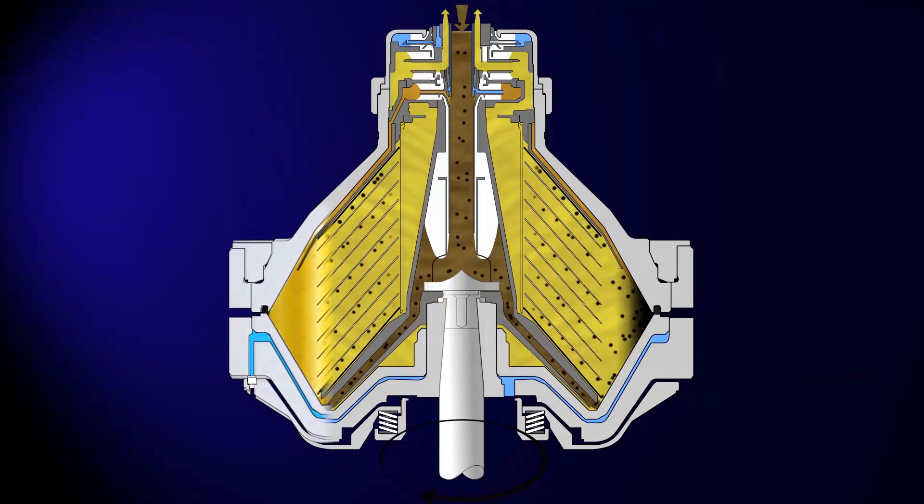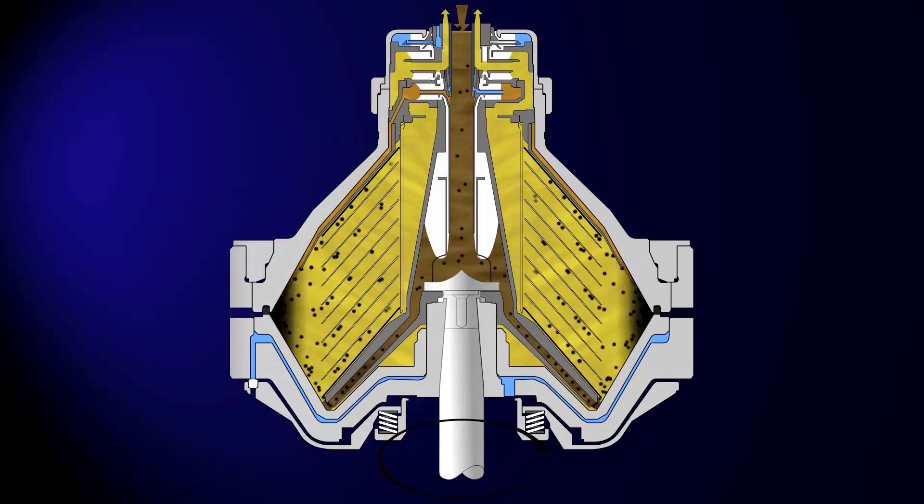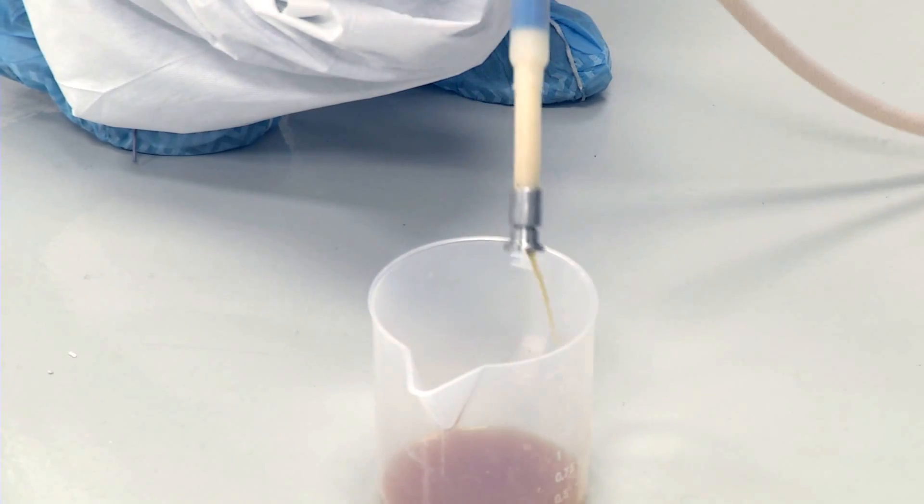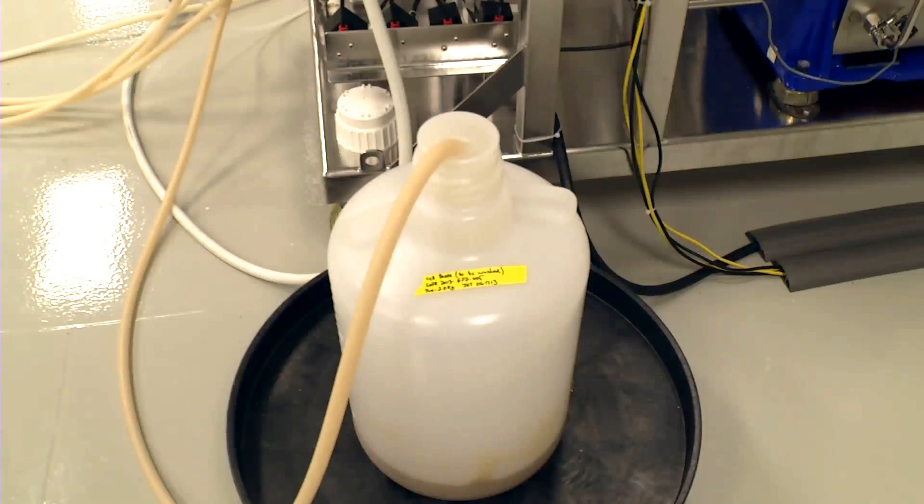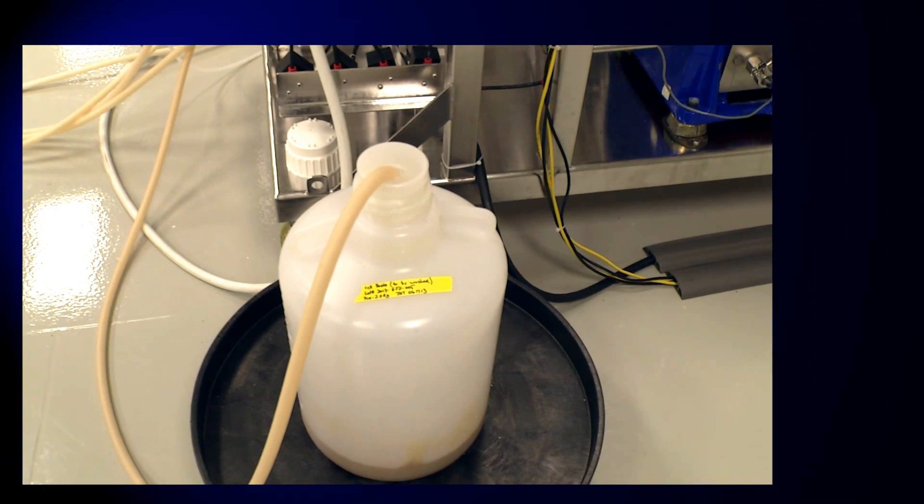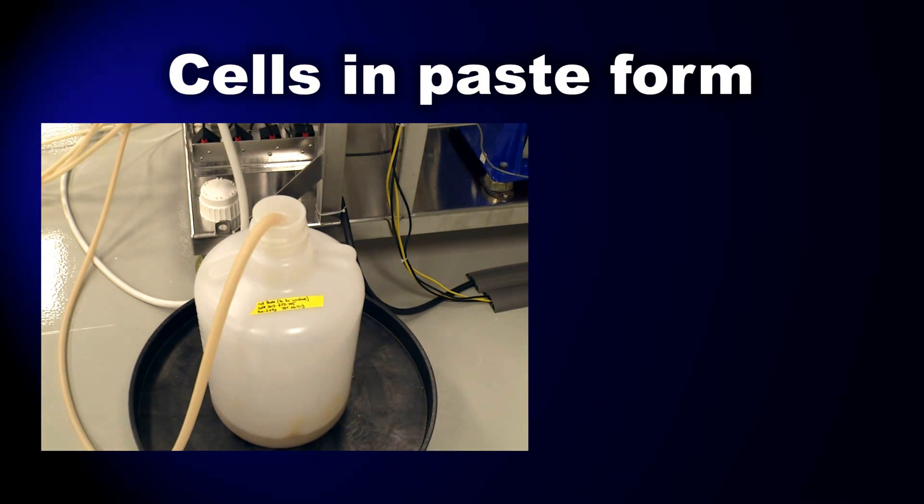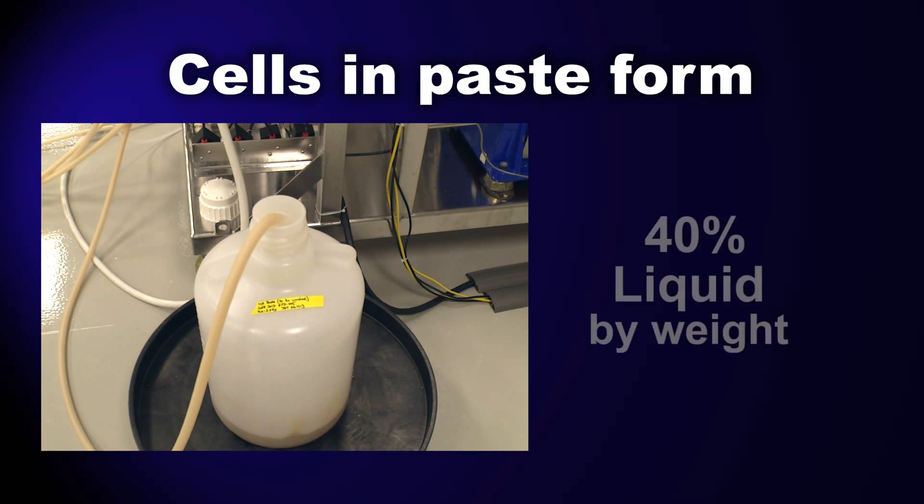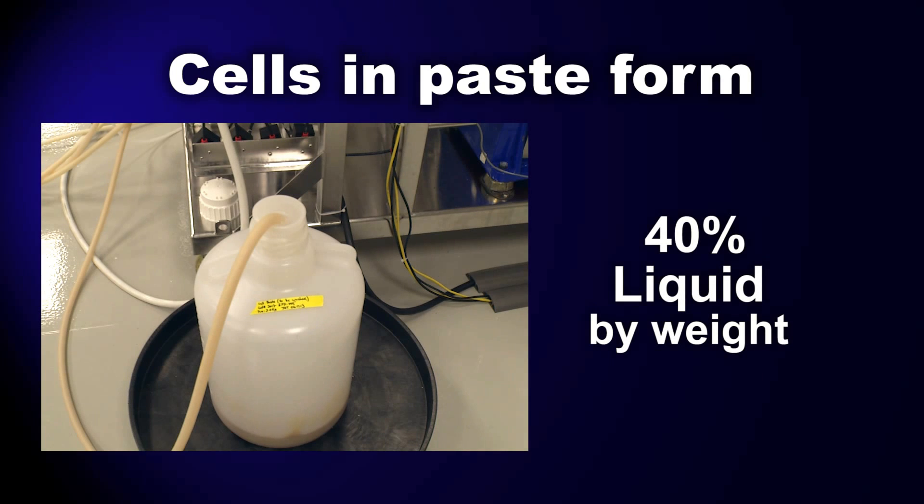Once the solids are discharged, the centrifugation step can resume, while the clarified liquid is waste. At this point, the cells are in a paste form and although most of the liquid has been removed, our cell paste is still about 40% liquid by weight.